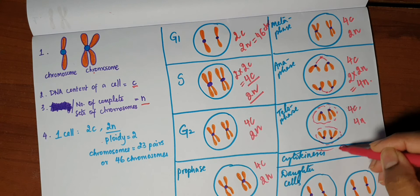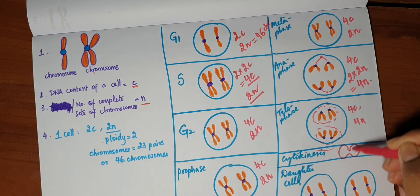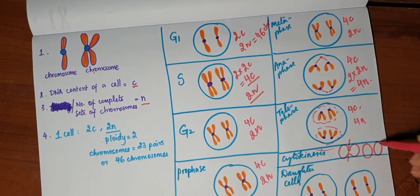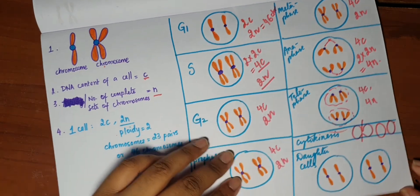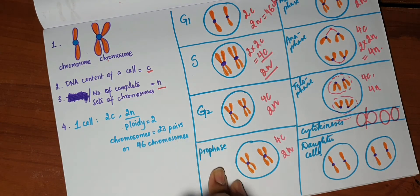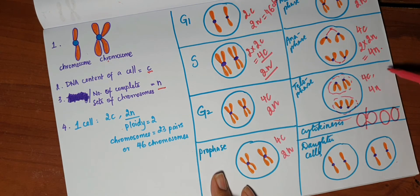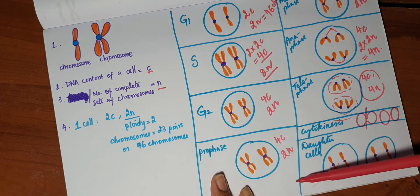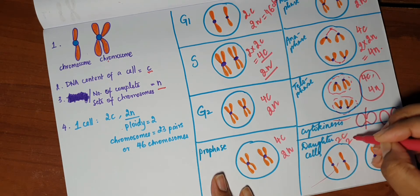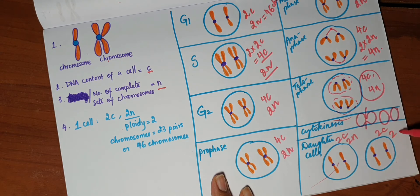In cytokinesis, the cell will undergo division. A furrow will appear, it will cleave the cell, and we'll have two daughter cells. So here we have two daughter cells. This information, 4c and 4n, has been split into half. So each daughter cell receives half of that information. So we have 2c and 2n, 2c, 2n.